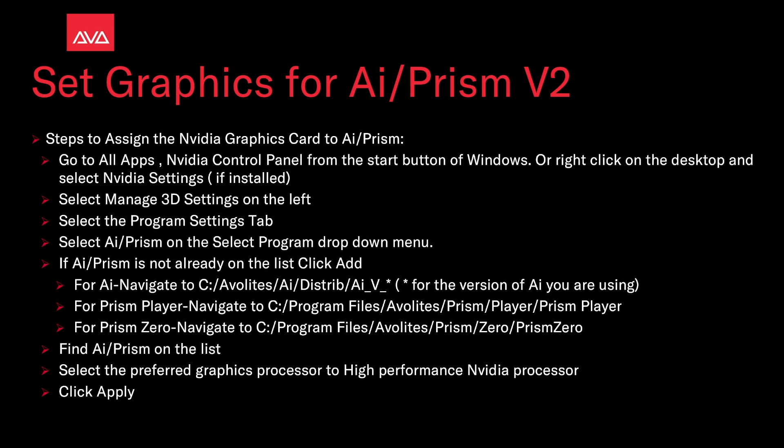For Prism Player, navigate to C drive > Program Files > Avalites > Prism Player > Prism Player. For Prism Zero, navigate to C drive > Program Files > Avalites > Prism Zero > Prism Zero. Then select AI or Prism on the list, set the preferred graphics processor to High Performance NVIDIA Processor, and click Apply.